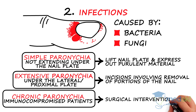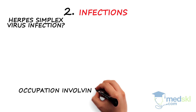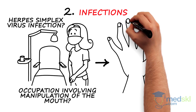A history of herpes simplex infection, or an occupation involving manipulation of the mouth, such as a dental hygienist, in the presence of vesicular lesions, is highly suggestive of herpetic whitlow.